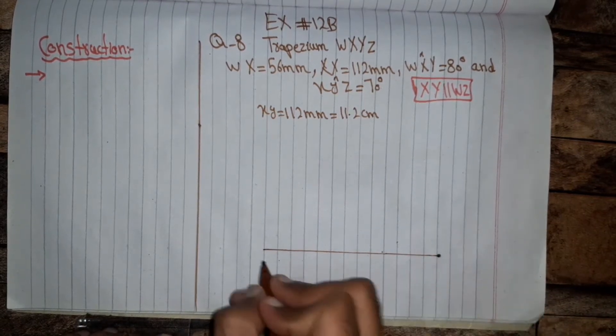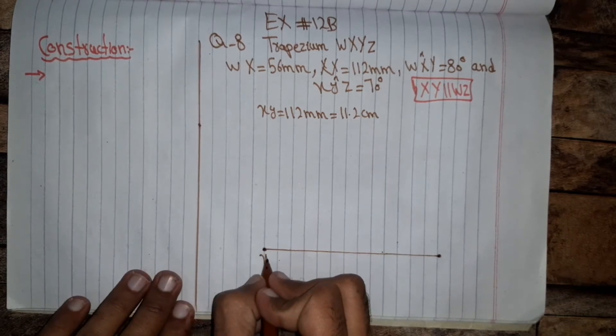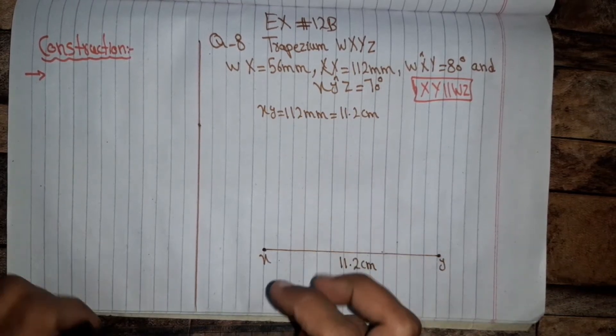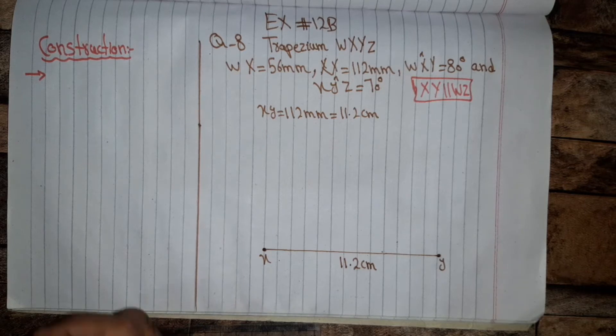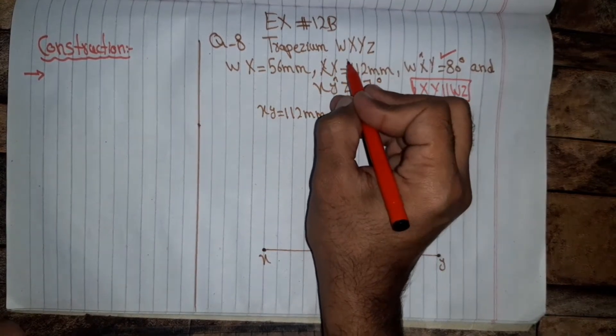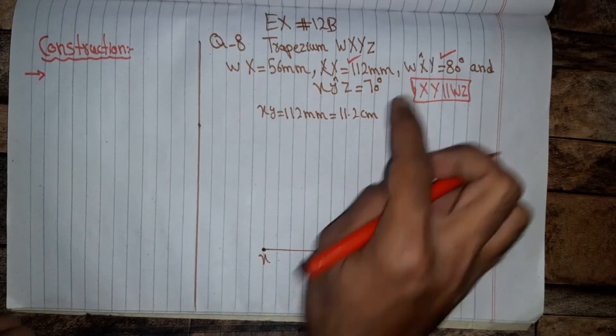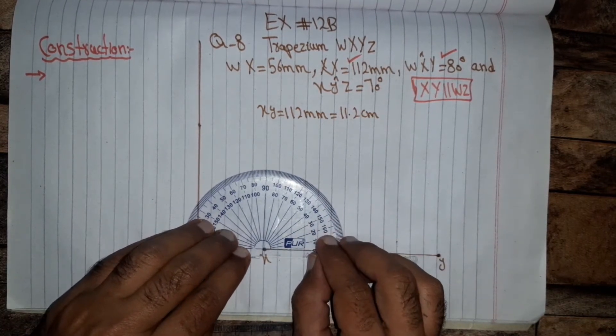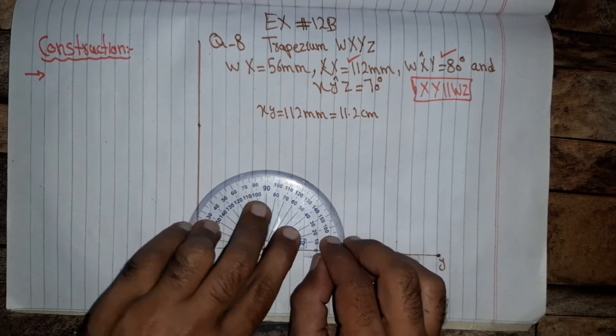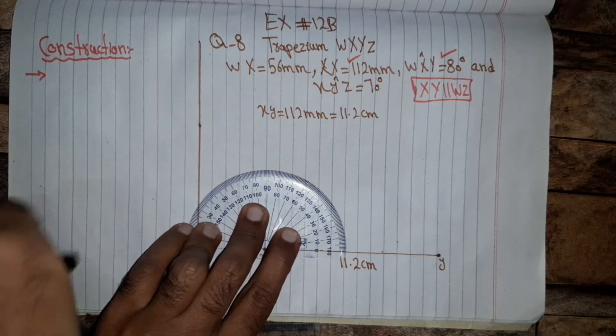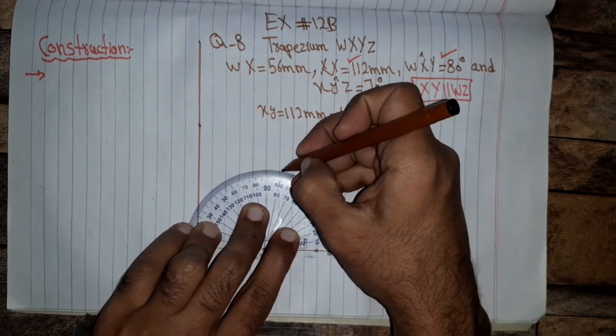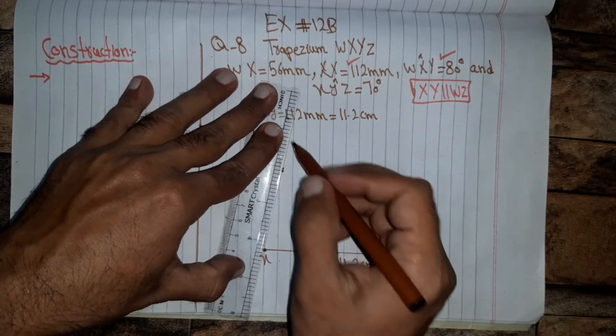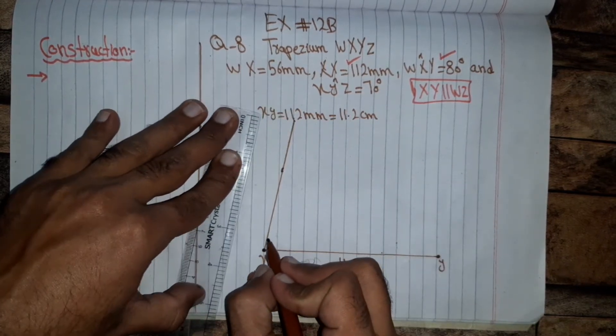Now we will construct this angle. We have drawn this length and now we will construct this angle of measurement 80 degrees at X. So this is 80 degree line. This angle is 80 degrees.